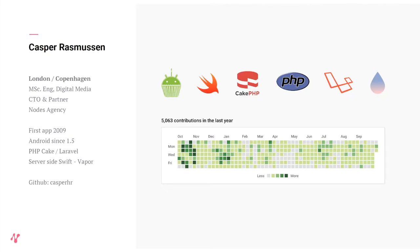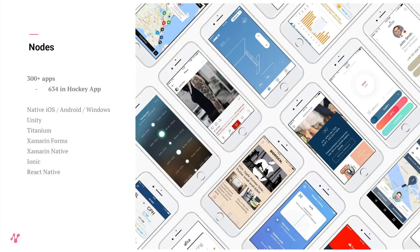In Nodes, we've done a lot of applications over the last many years. I checked HockeyApp — the name of App Center before Microsoft bought them. We have 434 apps done since 2009. Of course, this includes White Label, iOS, Android, Windows, etc. More than 300 different app projects have been done. We've done native iOS, Android, Windows, Unity, Titanium, Xamarin Forms, Native, Ionic, and React Native — we've tried a lot of them. But about 85% is native.